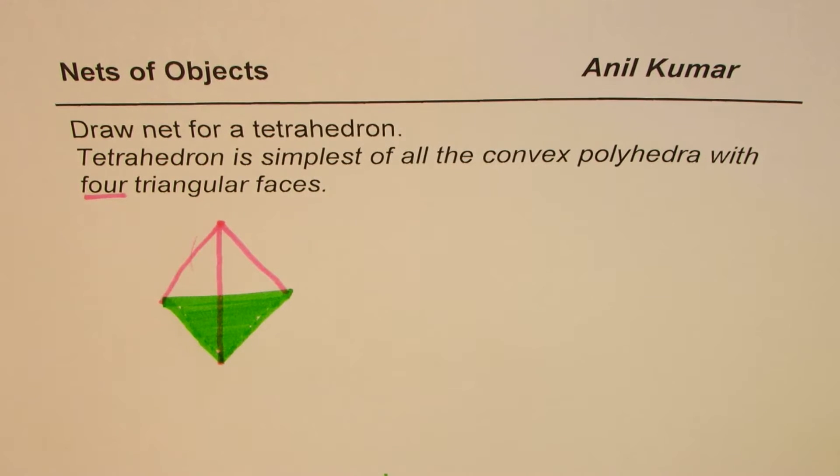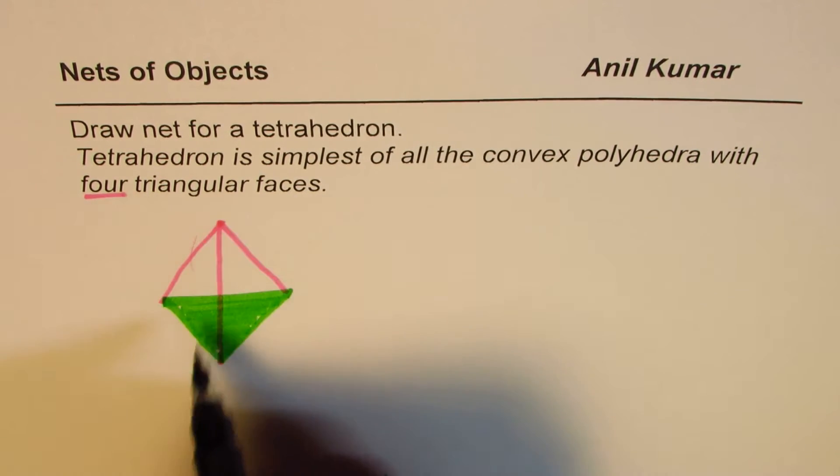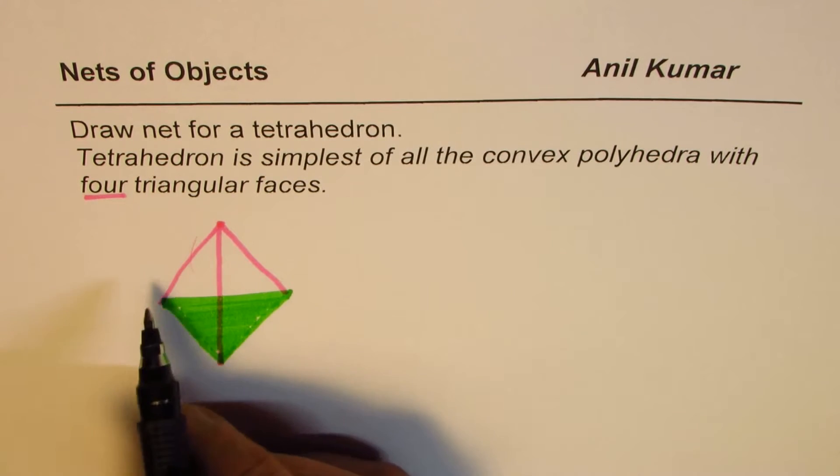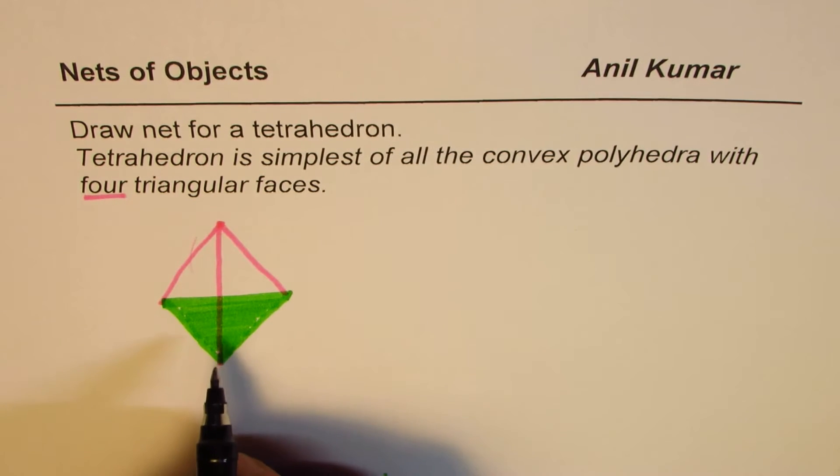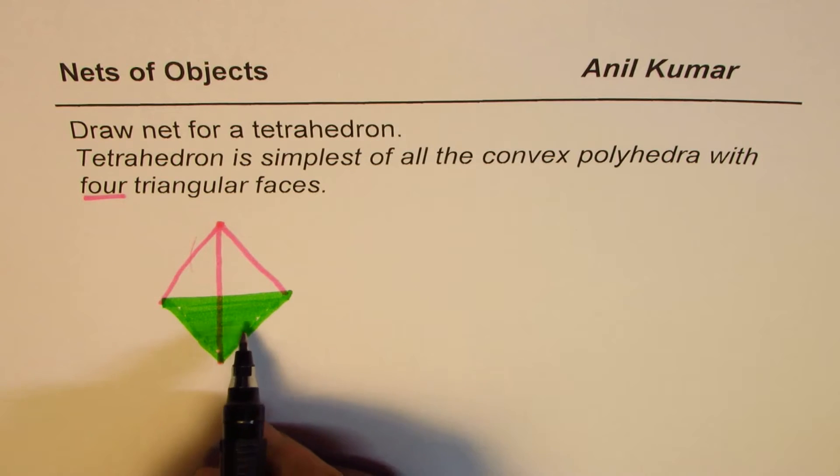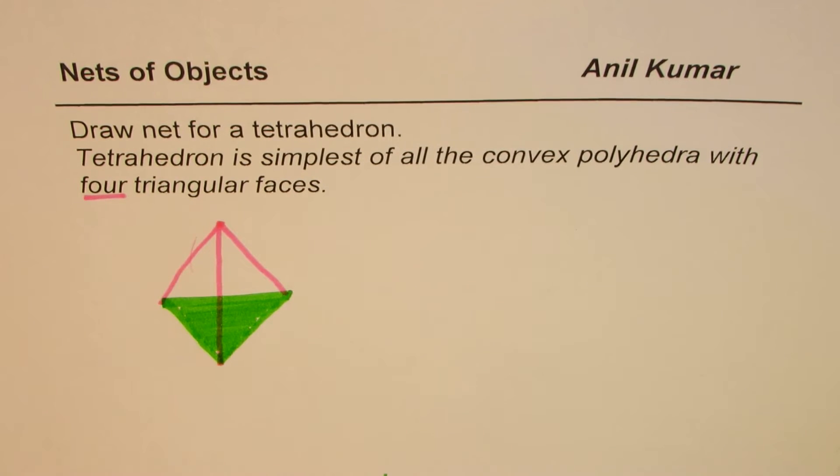So tetrahedron has triangular base and three triangular faces - that makes four triangular faces in all. That's the figure given to you. You need to draw net for this particular figure.